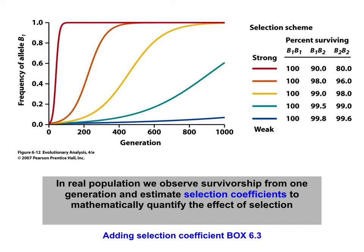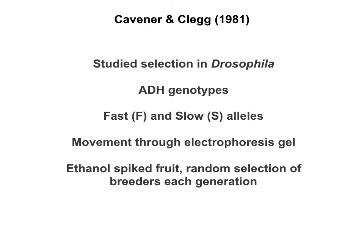We can also look at selection in natural populations and document its effects, seeing how well they correspond to theoretical mathematical predictions. Many experiments have applied selective pressures to populations and measured the response. One classic experiment was done by Douglas Cavanaugh and Michael Clegg studying Drosophila — fruit flies. Fruit flies have two different alleles at the ADH gene, which codes for alcohol dehydrogenase: a fast (F) allele and a slow (S) allele, corresponding to proteins that migrate faster or slower on an electrophoresis gel.